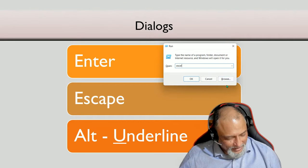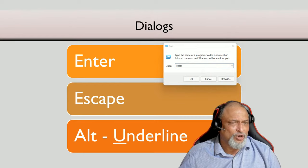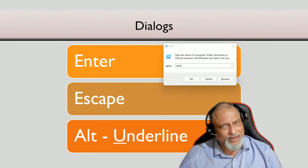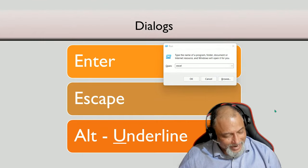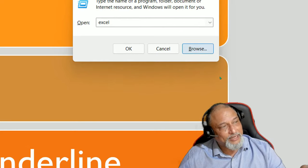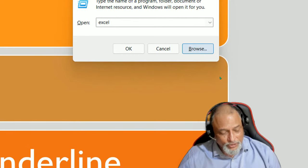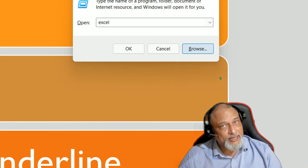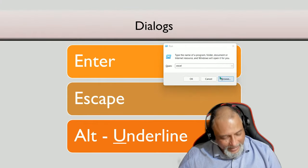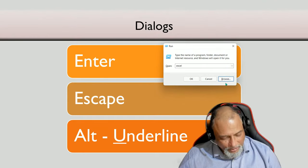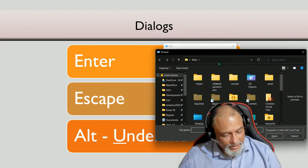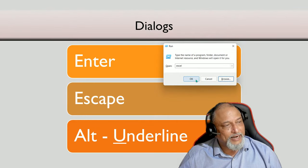There is one more thing: you'll notice a button called Browse. What is the shortcut for that? In a complicated dialog this can be very relevant. If you want to navigate buttons in a dialog using the keyboard, look for underlined letters on the button labels. The Browse button has B underlined, so Alt+B will activate it. So: Enter, Escape, Alt+B — and to complete the topic, Alt+O for OK.